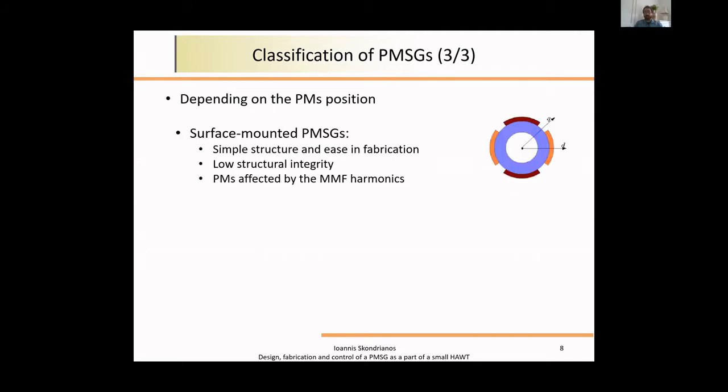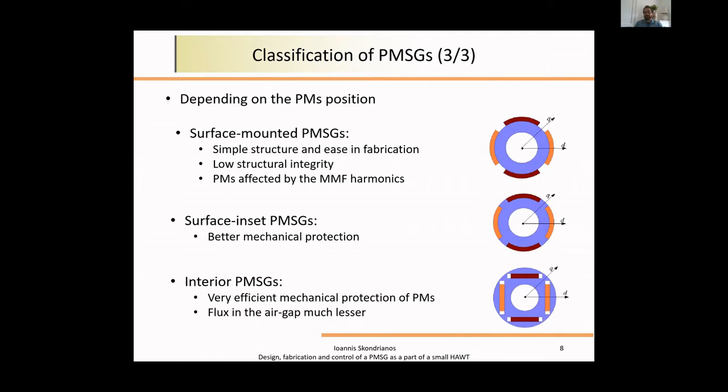Depending on magnet position, magnets located on the rotor, we have three configurations. Surface mounted magnets, characterized by simple structure and ease in fabrication. However, they have low structural integrity, especially at very high rotational speeds, and are affected by magnetomotive harmonics. Second is surface inset PMSGs in the rotor with better mechanical protection. The best mechanical protection is given by interior PMSGs, most efficient in structural integrity, but the flux in the air gap they produce is much lesser.